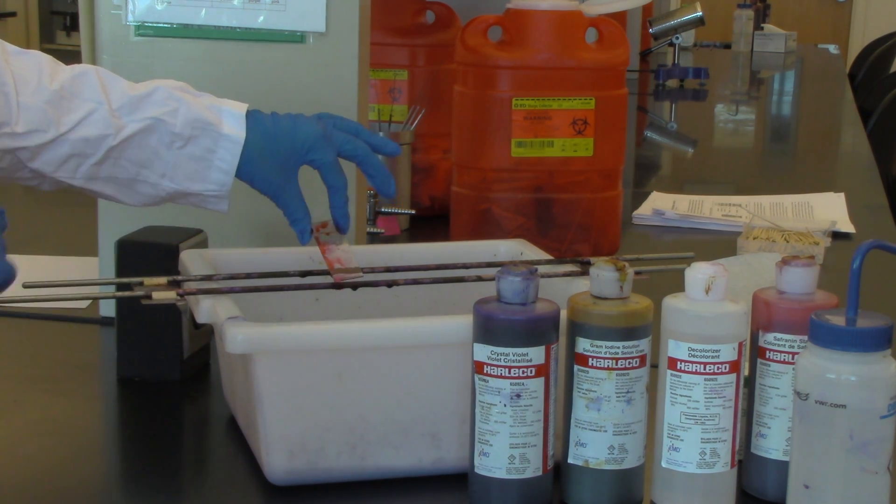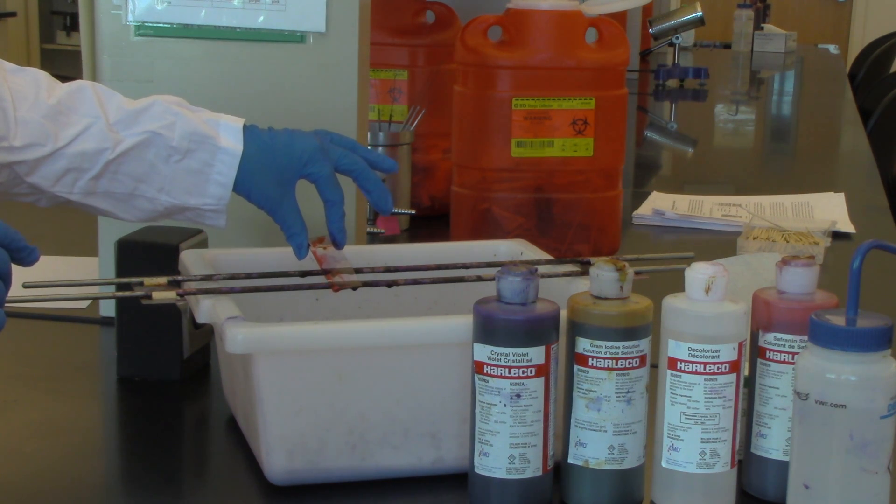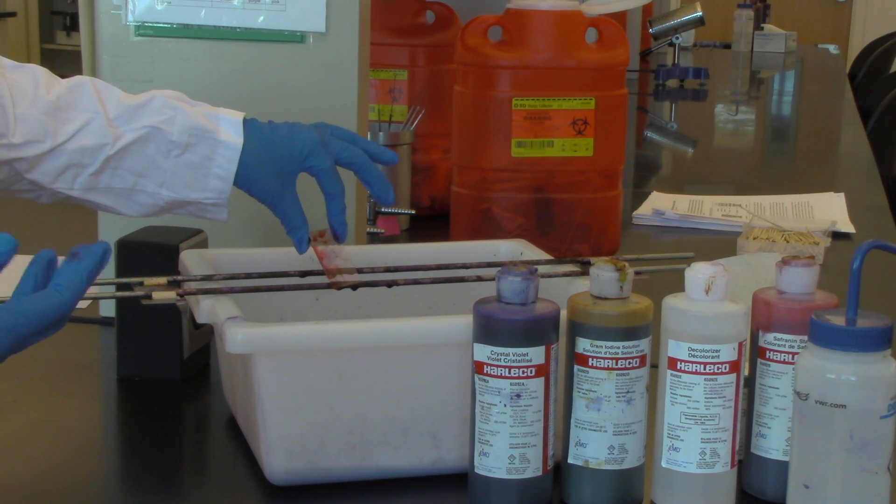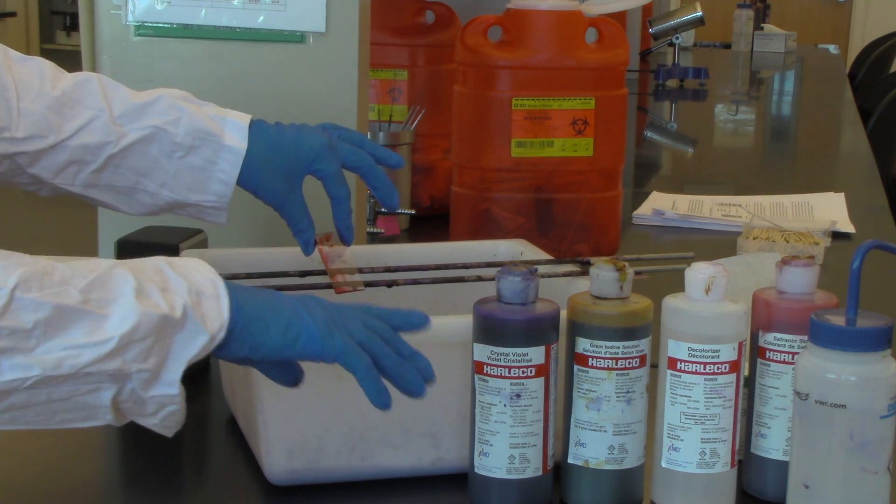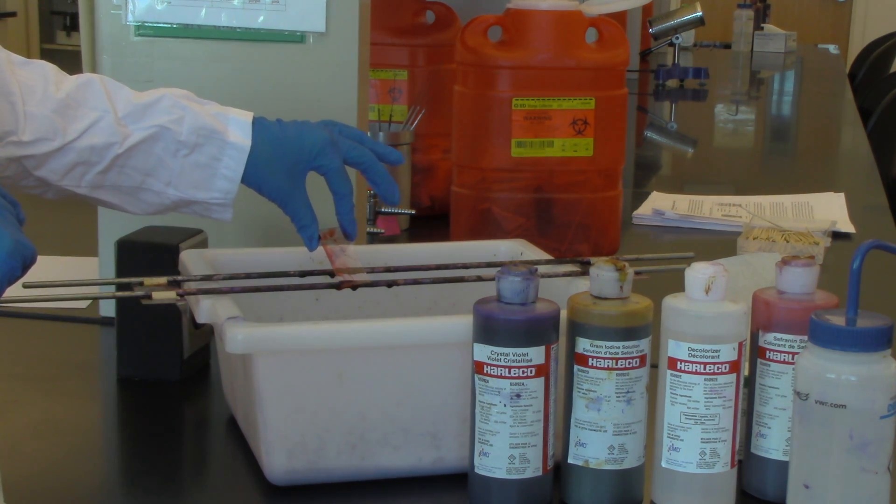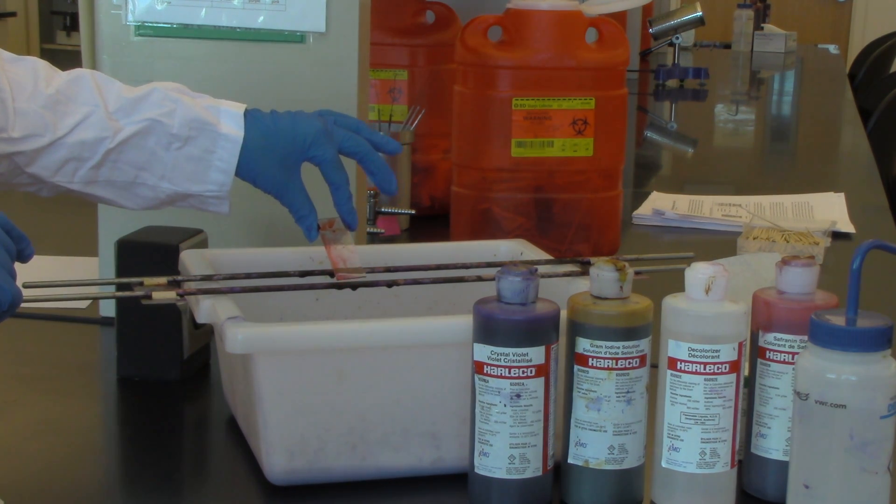But when you go to that decolorizing step it basically degrades and breaks down that gram-negative wall and the crystal violet will wash right back out. So you need to do that last step with the safranin to pick up the gram-negative, and that is the gram stain.